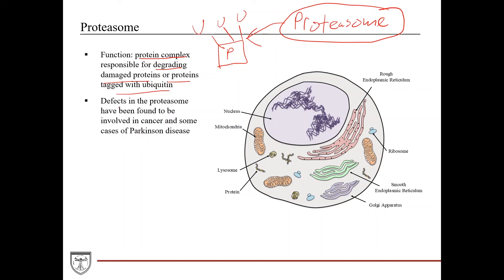In pathology, defects in the proteasome have been found to be involved in certain cancers. This makes sense: if a protein that drives DNA replication or cellular division is not getting degraded and is running amok, it's going to cause uncontrolled cellular division, and that's how you get cancer. Proteasome defects have also been implicated in some cases of Parkinson's disease.